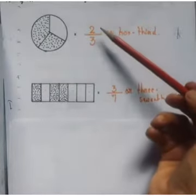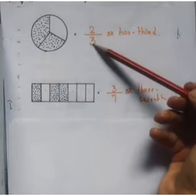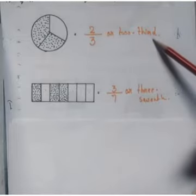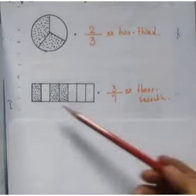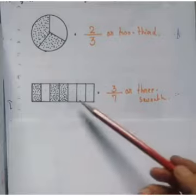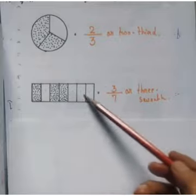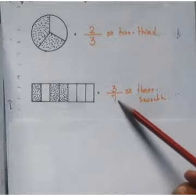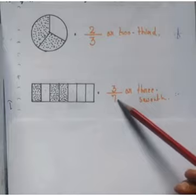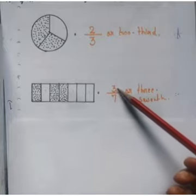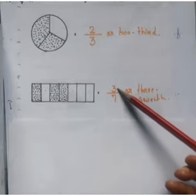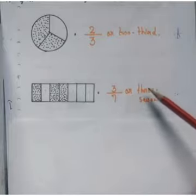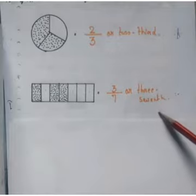You will read the fraction as two by three, or two-third. Similarly, here I have drawn a rectangle and divided it into seven equal parts, so your denominator will be seven and your numerator will be three. You will read the fraction as three by seven, or three-seventh.